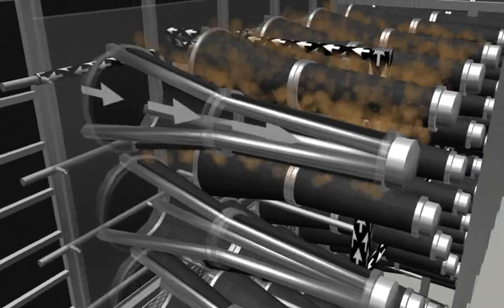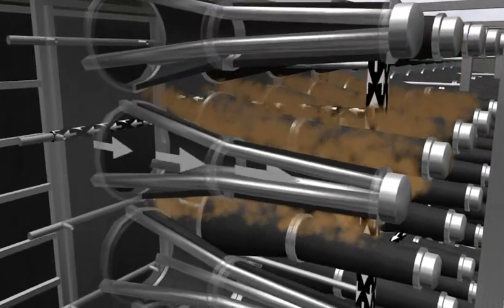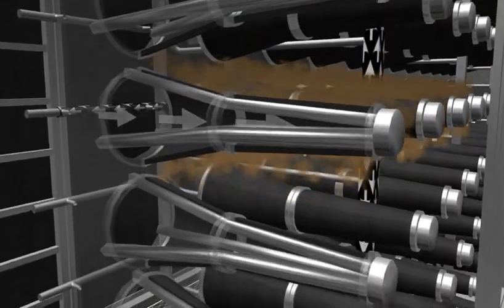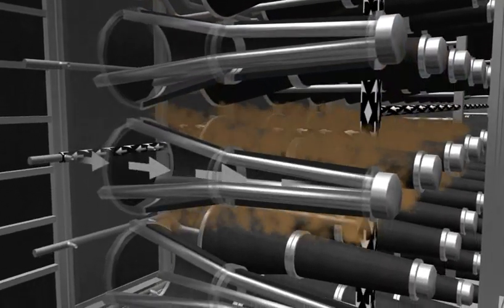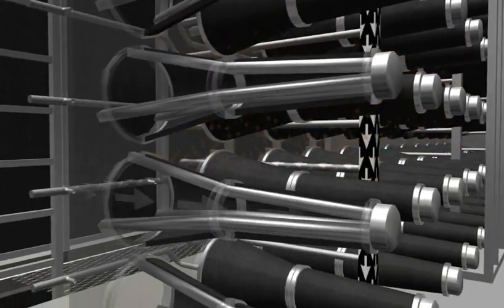The system automatically initiates a cleaning cycle and pulses air into the filter rows one at a time until the differential pressure returns to an acceptable level. When the filter cleanliness is acceptable, the system stops the cleaning cycle until the next time the differential pressure indicates a need for cleaning.